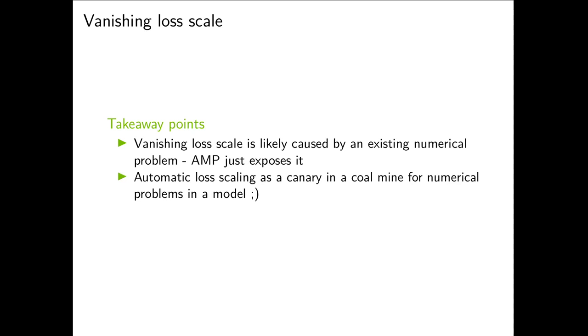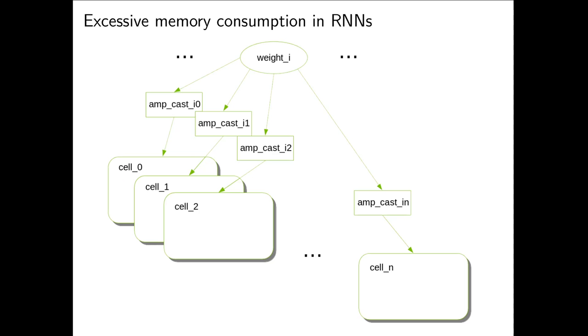I just wanted to mention this vanishing loss scale problem because if you use AMP more, you are bound to encounter it one day or another. More likely than not, it is caused by some already existing numerical problem in a model. AMP just exposes it. On a slightly less serious note, one can think of automatic loss scaling as a canary in a coal mine for numerical problems in a model.